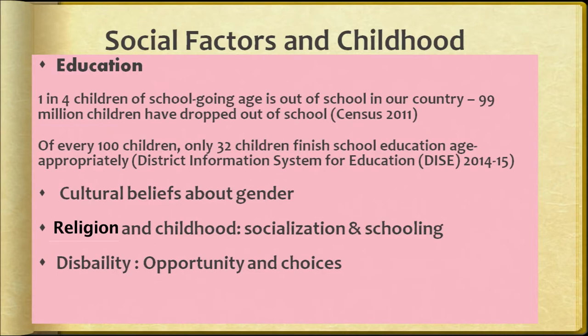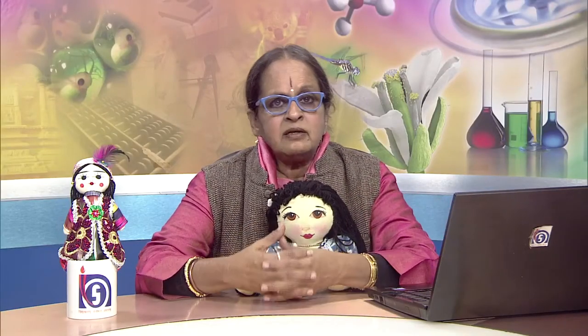We must provide a healthy, qualitatively appropriate environment for children in all schools. Despite government efforts, 1 in 4 children of school-going age is still out of school. Of every hundred children, only 32% finish school. For economic reasons, children go to work, but we can try to let children work after school so they still attend. In contemporary times, literacy is very important and technology-driven changes mean we cannot do without it.